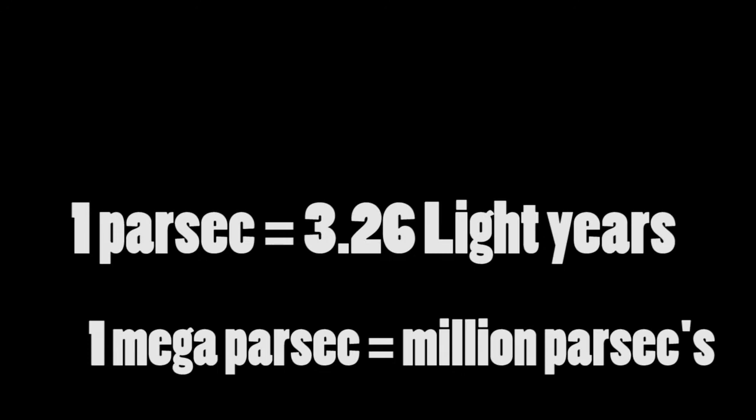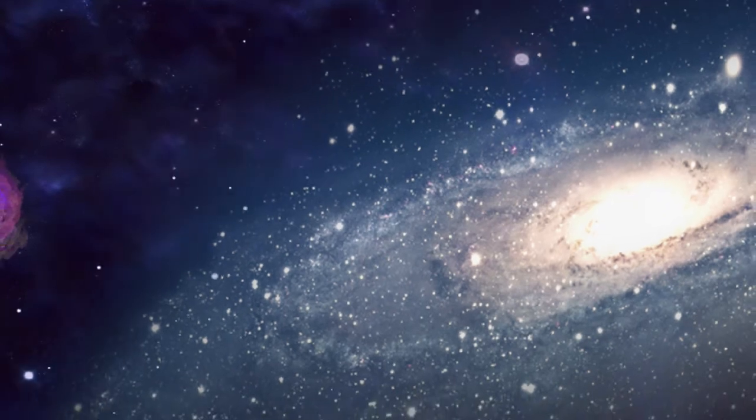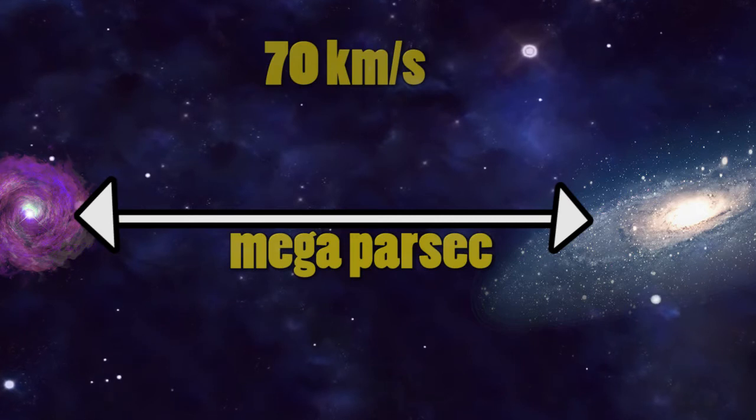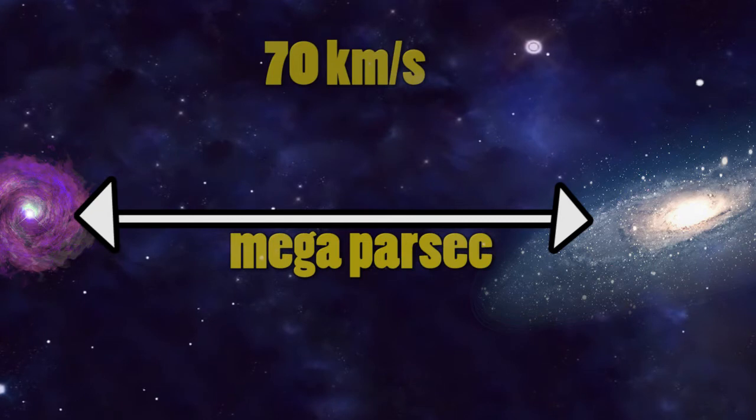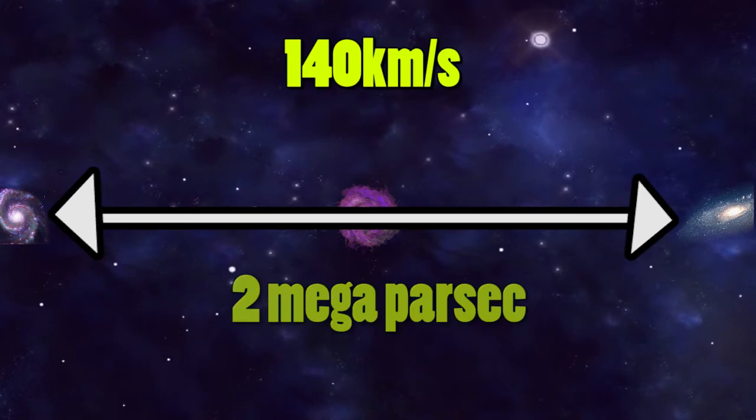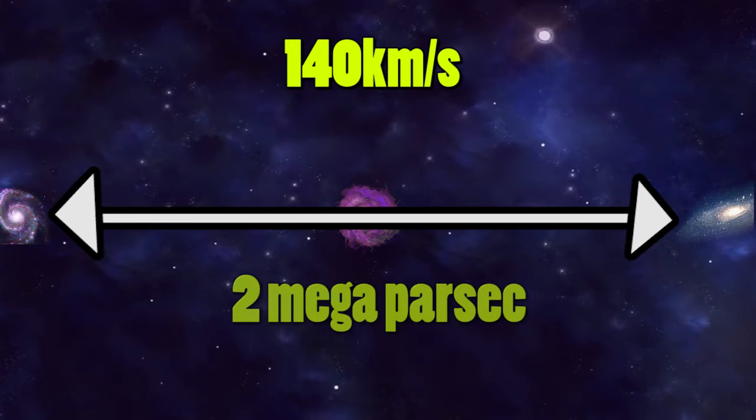So what does this number mean? If there are two galaxies separated by a megaparsec, that is a million parsecs, they will move away from each other at a rate of 70 kilometers per second. If we go another megaparsec, it will be double that, 140 kilometers per second, and so on and so forth.